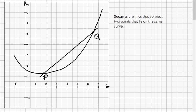the secant that goes through the two points, the end of the interval, P and Q, and calculating the slope of this secant, which is just a line.